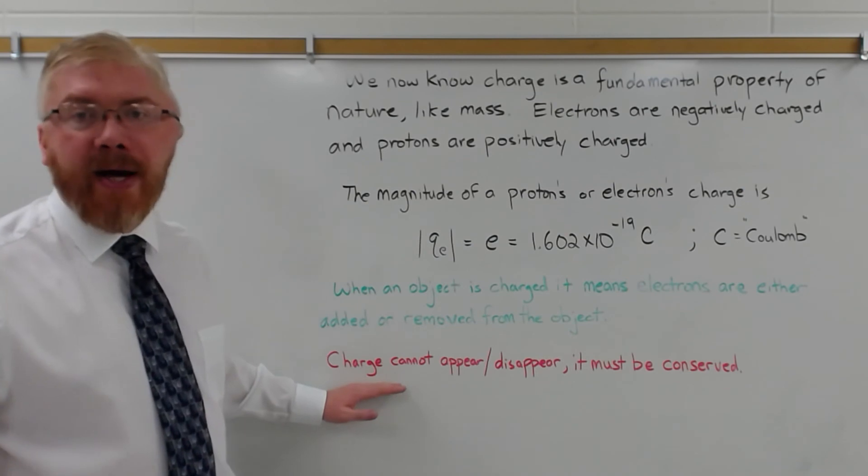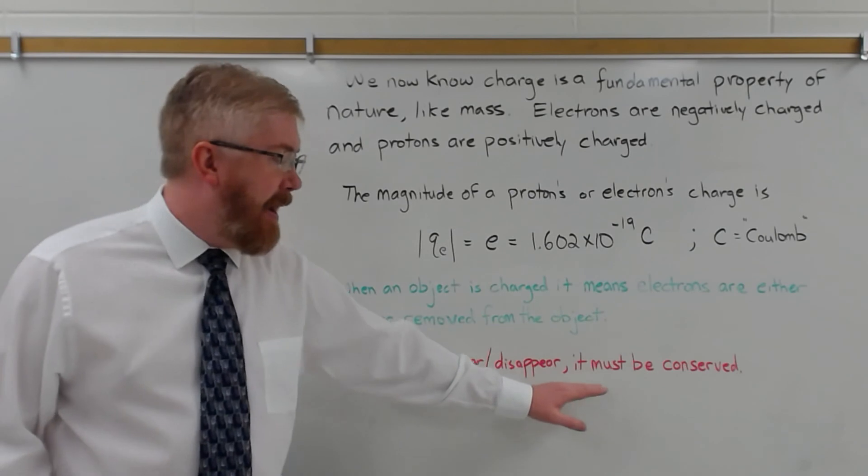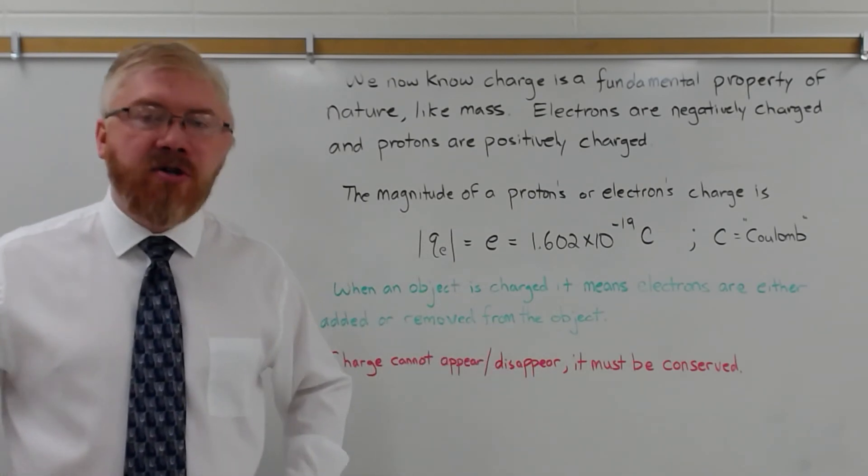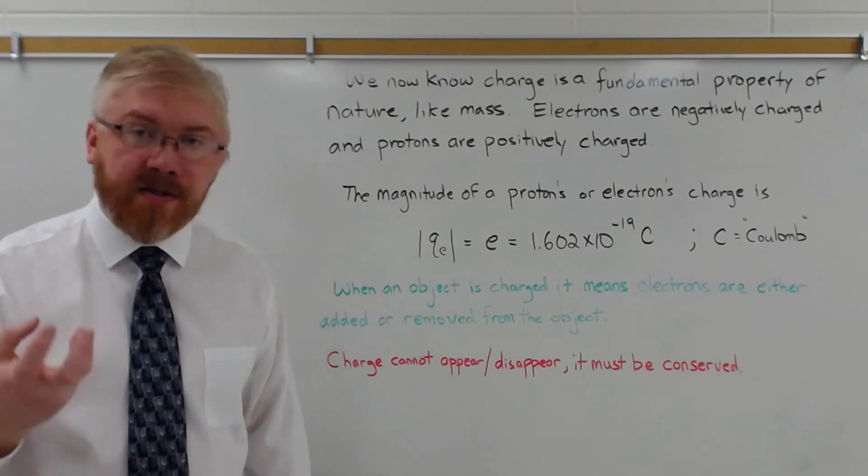For the purposes of this chapter and the following few chapters, we're not going to create or destroy matter. A charge cannot appear or disappear then. It has to be conserved. So if I remove the electrons and make an object positively charged, those electrons have to go somewhere.